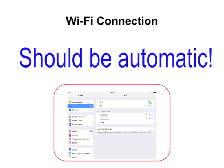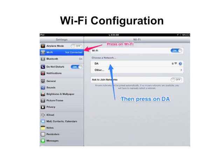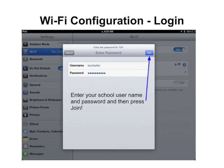If you do not have one, use the following slides to troubleshoot your Wi-Fi connection. Once you have pressed on the Settings gear, press on Wi-Fi. You may or may not be connected. You will want to choose the DA network. Once you've chosen the DA network, you will be asked to enter in a password. Enter in your school username and password, and then press Join.